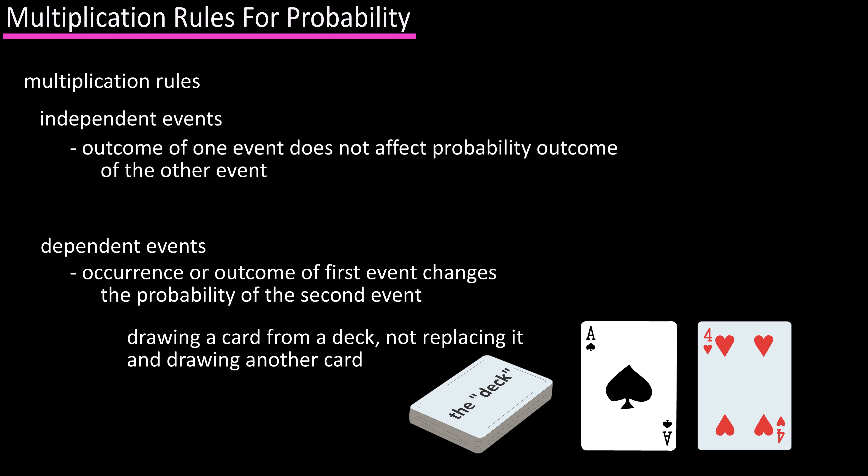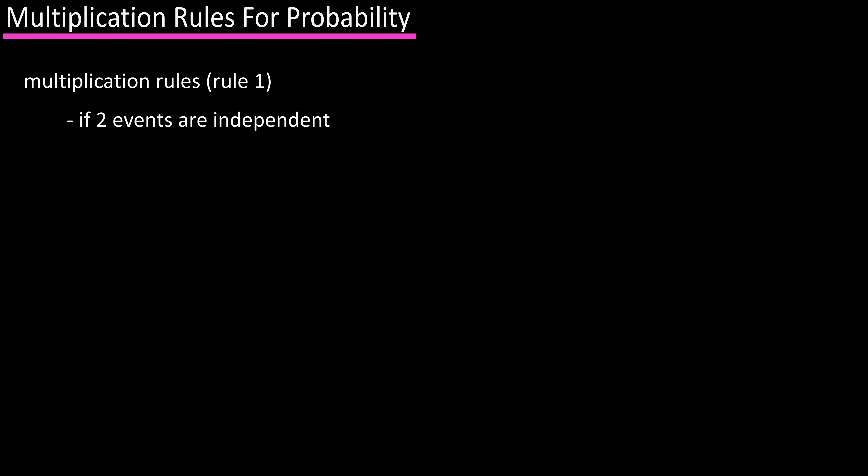Now to the multiplication rules, and the first one is that if two events are independent, the probability of both occurring, P(A and B), equals the probability of A times the probability of B.